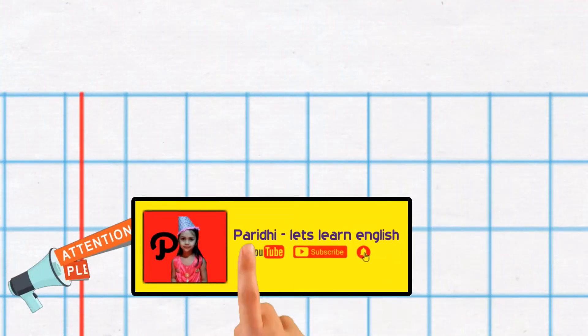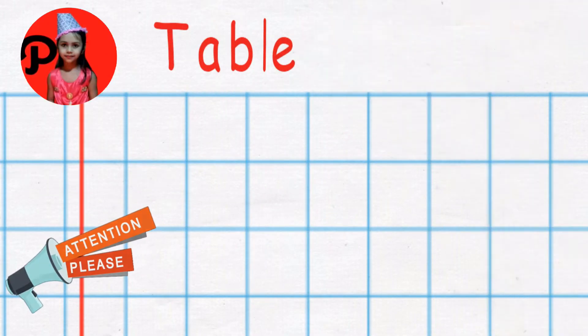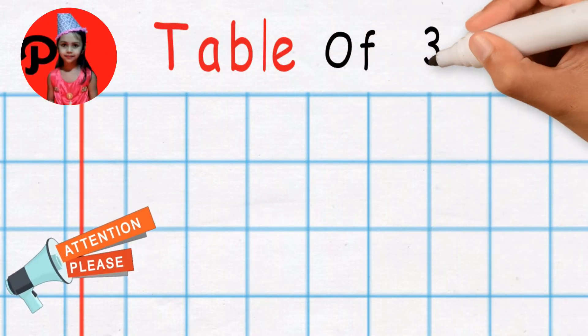Hello kids. Welcome to Paridhi. Let's learn English. Today, we will read and write table of 3. So let's start.